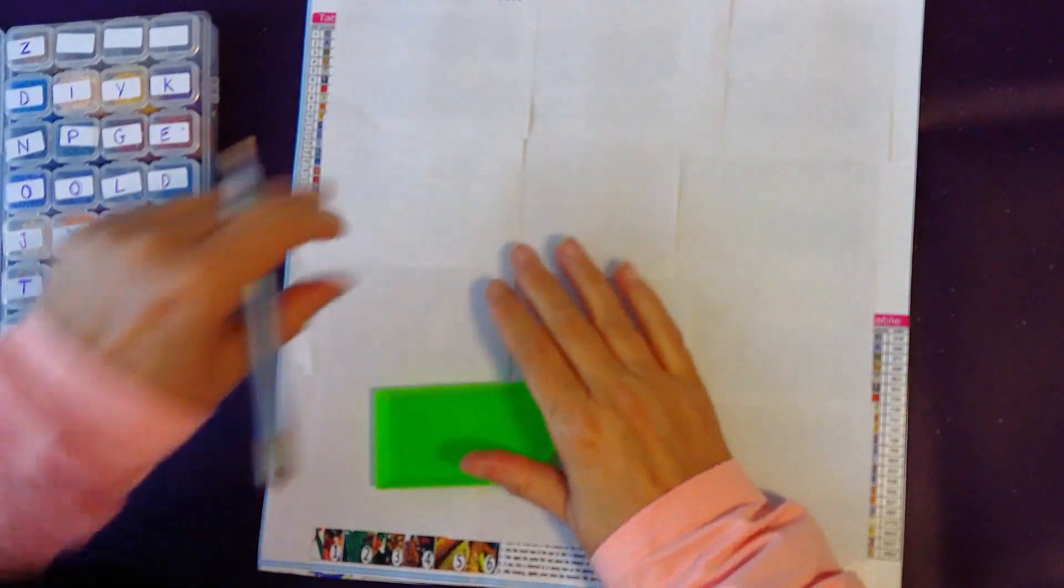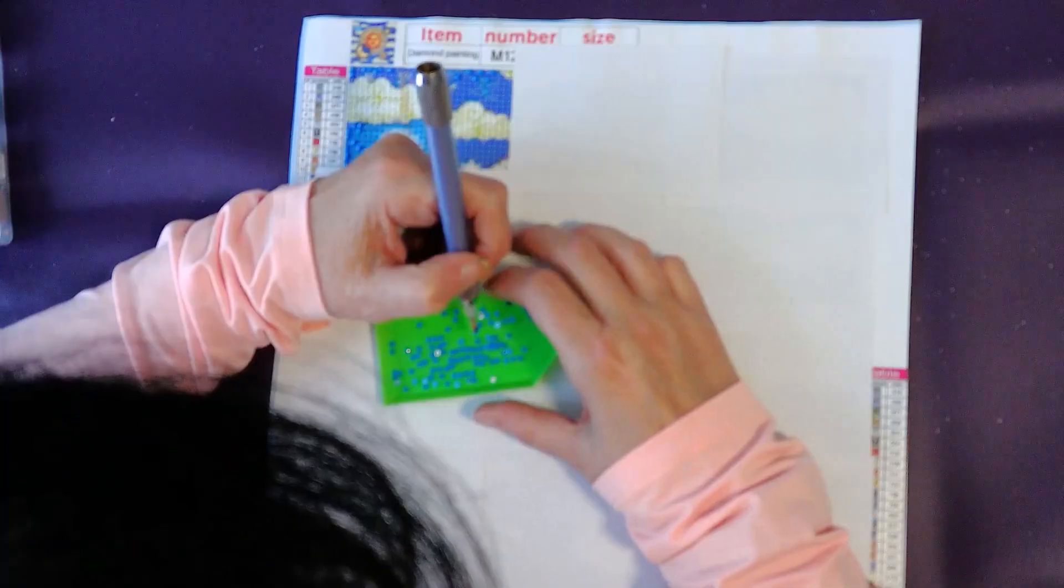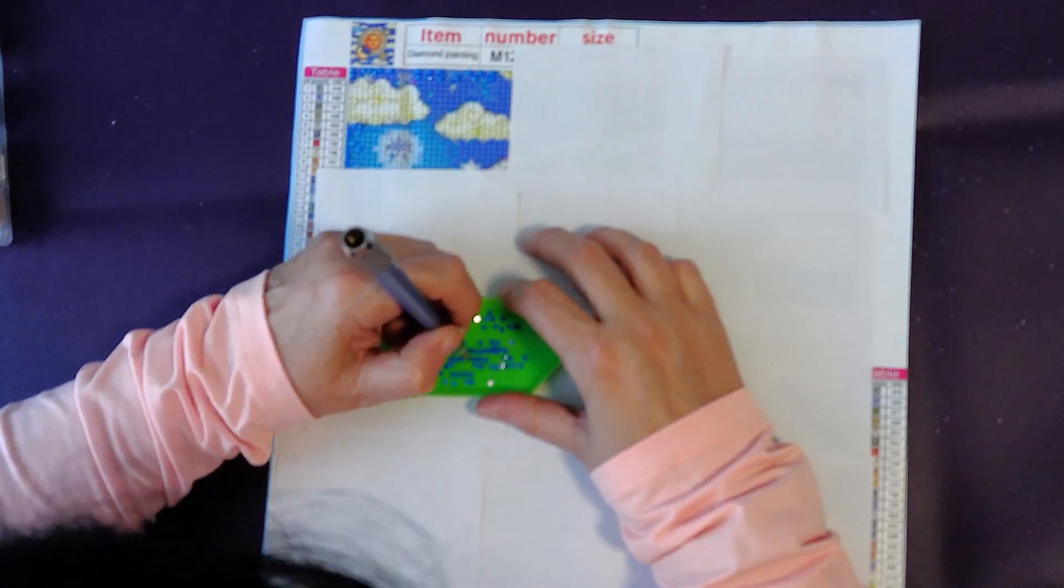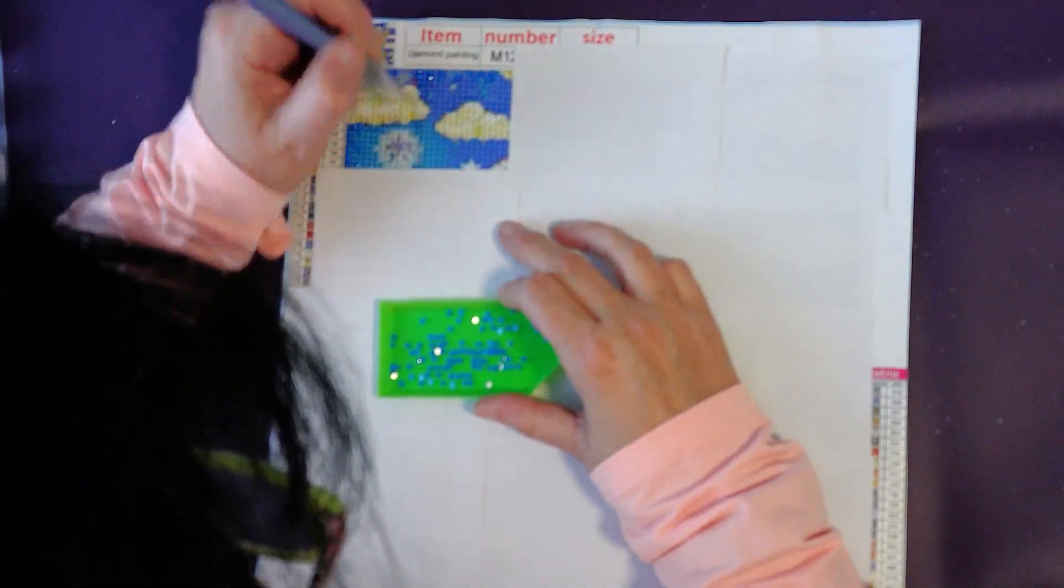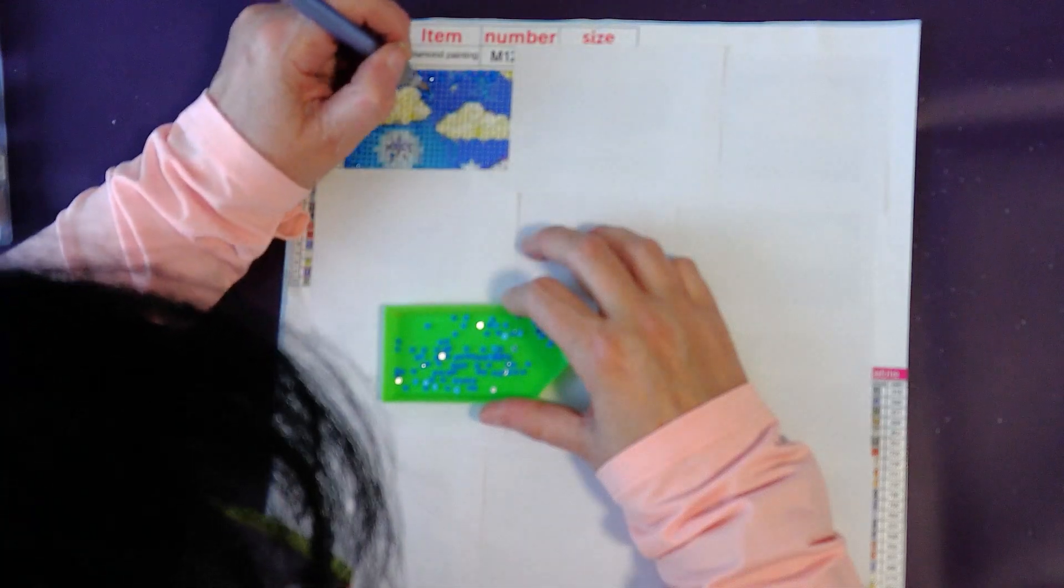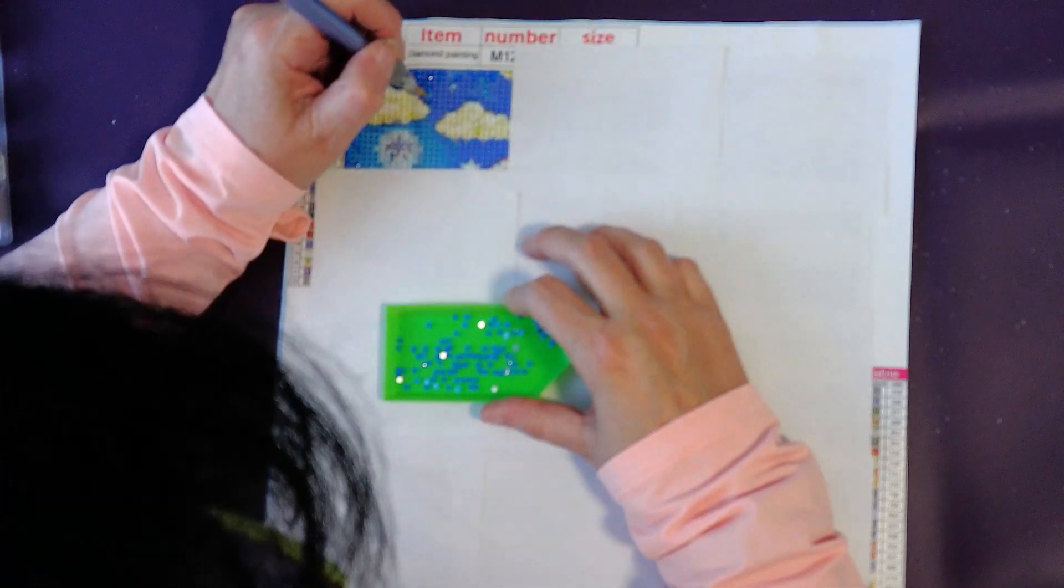Hi, how are you? Thank you for stopping by. We're starting a new project today. I'm calling it Sun and Clouds, and I'm going to be using the release papers, but I had to cut them in half because it's a small diamond painting.